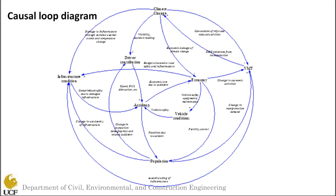Here you will see the causal loop diagram we developed for this study, which has many different loops. The first loop is the climate change loop at the top: climate change → infrastructure condition → accidents → economy → VMT → climate change. Here you see one big loop.